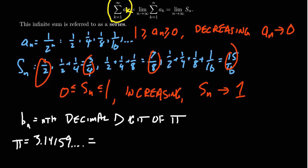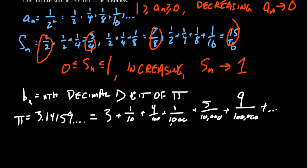This can be expressed as an infinite sum, right? Because this is 3 plus 1 tenth, plus 4 one-hundredths, plus 1 one-thousandth, plus 5 ten-thousandth, plus 9 one-hundred-thousandths. Keep on going.